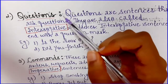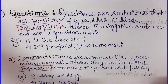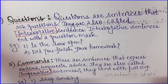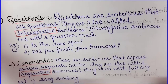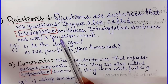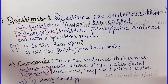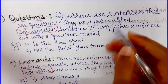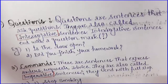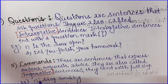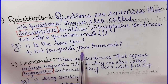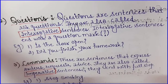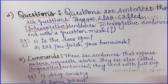The second type of sentences — we have questions. Questions are sentences that ask questions, and a question mark is used. They are also called interrogative sentences. Examples: 'What are you doing?' 'Is the door open?' — kya darwaza khula hai? 'Did you finish your homework?' — kya tumne apna kaam khatam kar liya? These are some examples of questions.